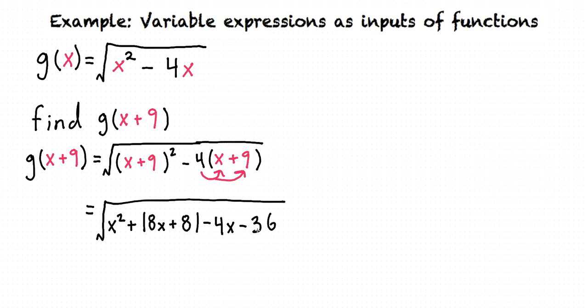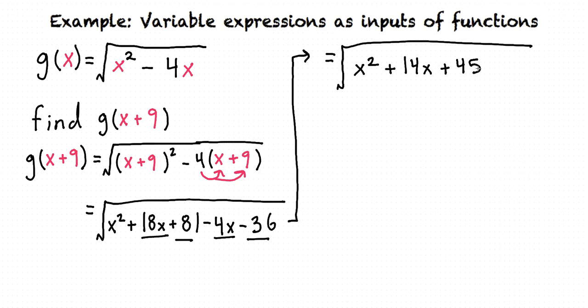At this point, we can combine like terms. This x squared does not have any like terms. There's no other terms with an x squared, so that stays as it is. We see that there are two terms that have just x raised to the first power with no exponent, and so 18x minus 4x is plus 14x. And then here we have plus 81 and minus 36, which subtract to create 45. So this is our final answer: g of x plus 9 equals the square root of x squared plus 14x plus 45.